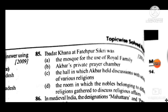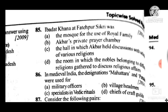Question 85: Ibadat Khana at Fatehpur Sikri was — answer is C, the hall in which Akbar held discussions with various types of religious functionaries. Question 86 answer is B.